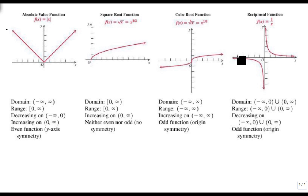It's decreasing all over. From left to right, it's always going down, even though this point is higher than this point, except at zero, which doesn't exist. And it's also an odd function.